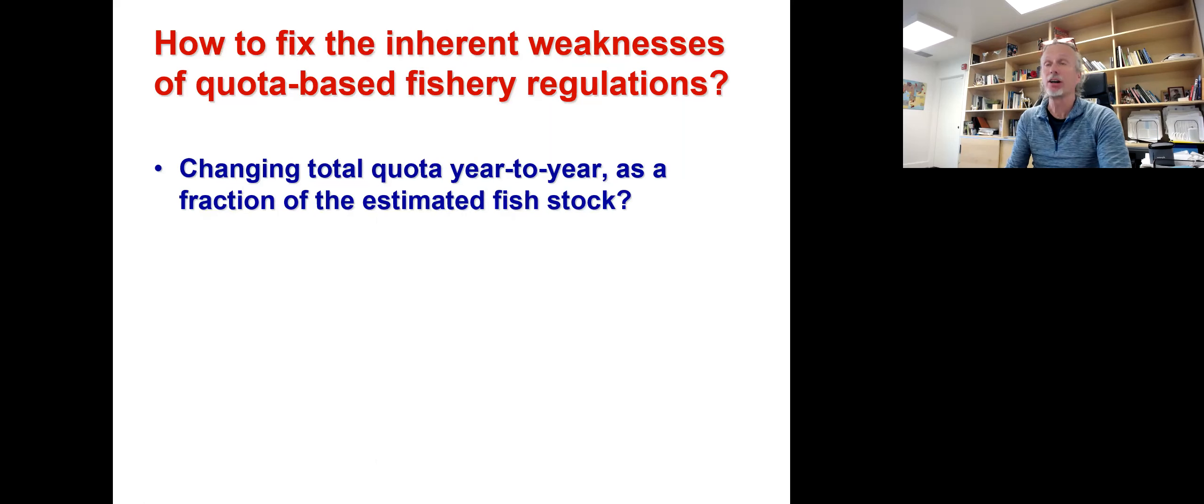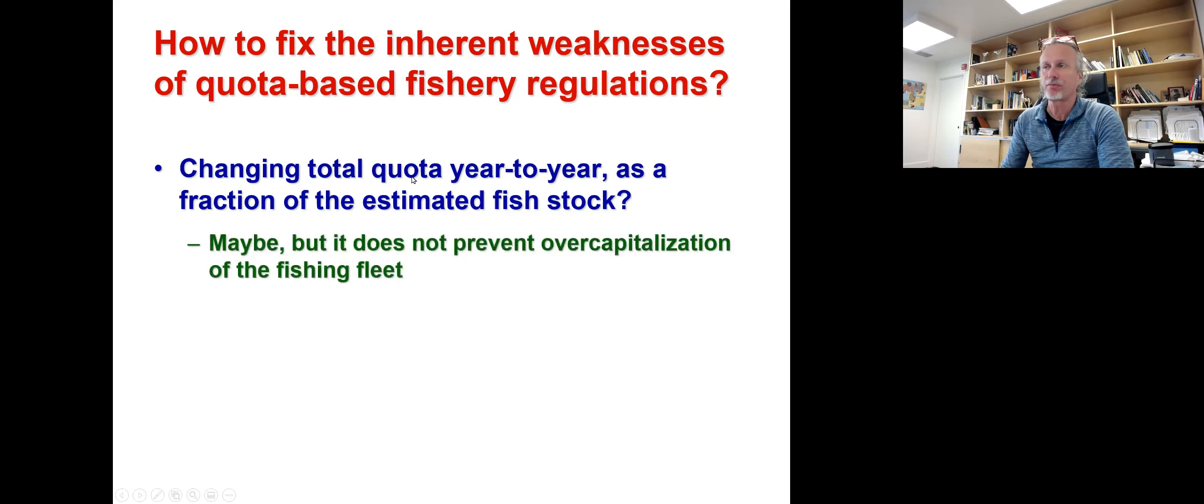So the question now is how to fix the inherent weakness of quota-based fishery regulations. For instance, one could think we could change the total quota year to year as a fraction of estimated fish stock, rather than setting a quota and never changing it. But there are a bunch of problems here. One that's not even indicated on the slides is that doing a good fish stock assessment is actually very hard. Stock assessments are affected by huge levels of uncertainty. There are vagaries of the weather, as we mentioned before, and it's difficult to understand where exactly the stock is. Boris Worm said that counting fish, or whales in this case, is like counting trees except they move and they are hidden underwater. So they might be difficult to spot.